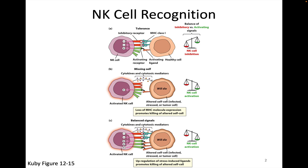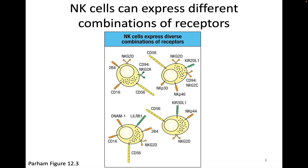NK cells express a combination of different receptors. So instead of having just one receptor binding one ligand, like a lymphocyte would have — a B cell or a T cell — NK cells have many different receptors that can each bind to different ligands.